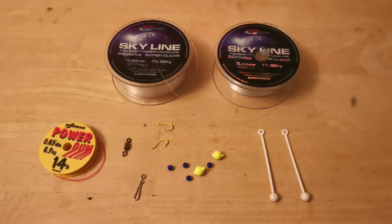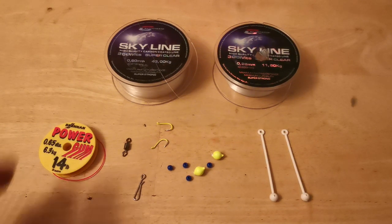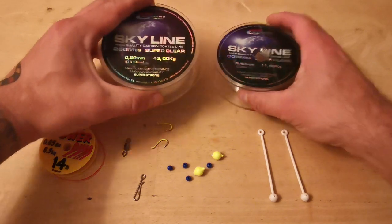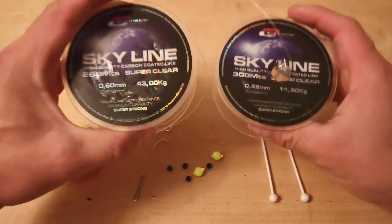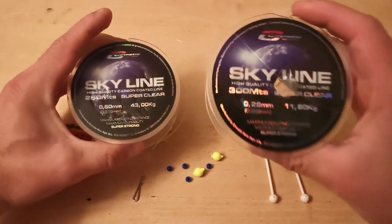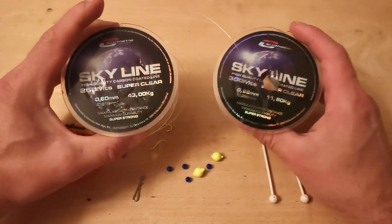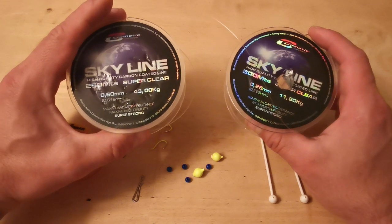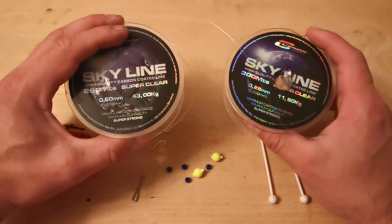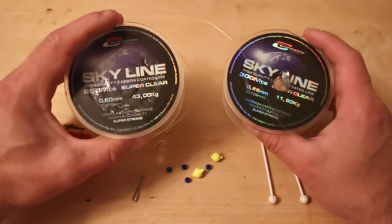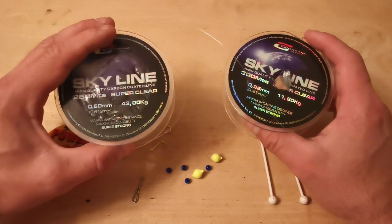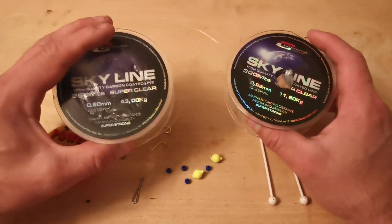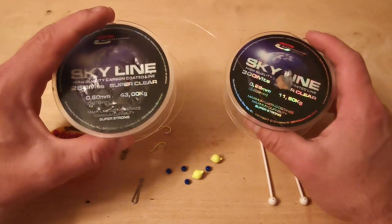Here are the components you're going to need to build this very simple rig. You're going to need two strengths of line - one for your rig body, one for your hook snoods. I use Cinematic Skyline, brilliant line, really low diameter for the breaking strain. On the left I've got the 43kg 0.60mm, that's going to be for the rig body because this rig is going to be dropped down against walls and I want the abrasion resistance with that.